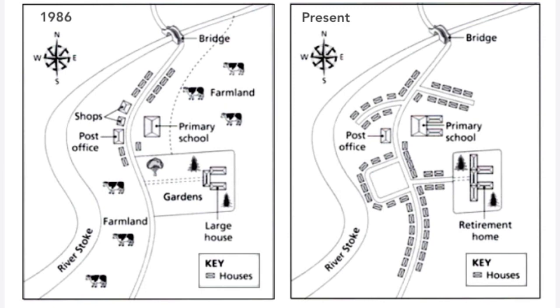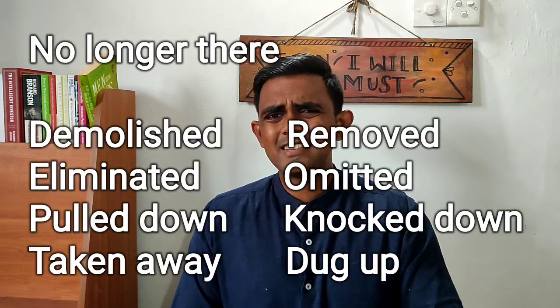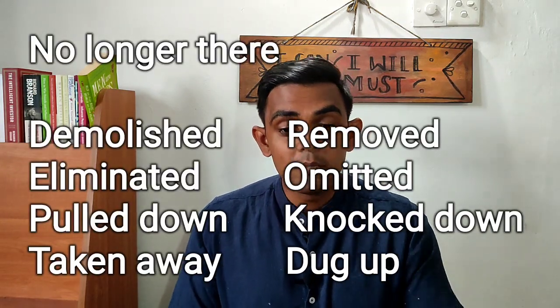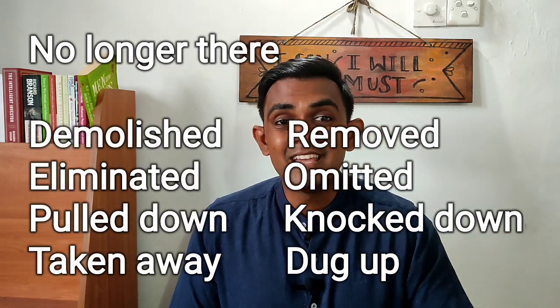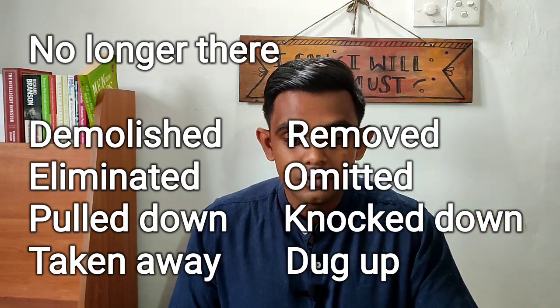Our next set of vocabulary is for when something is not there anymore — something that was there in the previous map but is not there in the current map. For example, if you see the farmland that was there in 1985 but is not there at present, then we can say this farmland has been demolished or dug up. If you are trying to use the phrase that it's not there anymore, we can say: demolished, removed, eliminated, omitted, pulled down, knocked down, taken away, dug up. Any of these words can show that something previously there is no longer there.